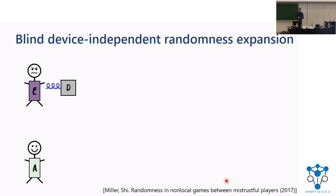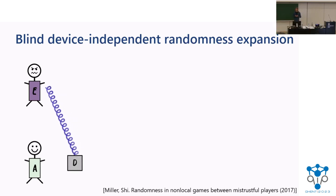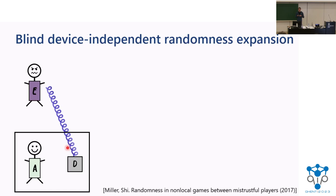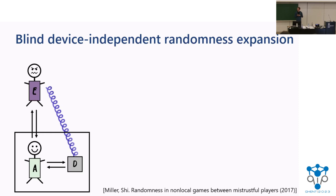So she engages the help of an untrusted quantum party, Eve. What Eve is asked to do is to prepare some quantum device and send this over to Alice. Eve can prepare this device D in whatever way she wants — she can entangle herself with the device as well. But she sends it over to Alice, and once Alice receives the device, Alice puts it in a box or secure lab, which prevents any direct communication between Eve and the device. Now Alice is going to interact over multiple rounds with this device and with Eve, and try to extract randomness from the answers of the device.